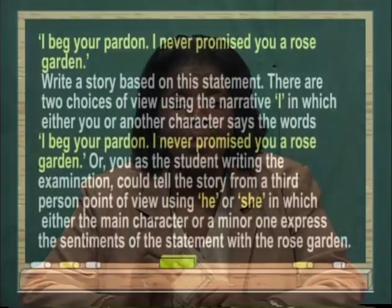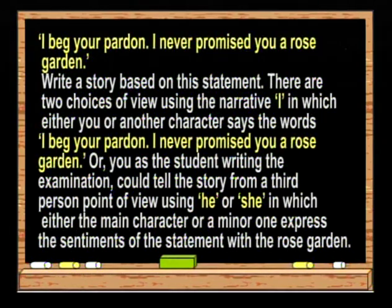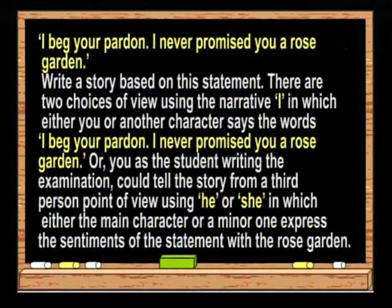Another example is taken from the May-June examination of 2000. Number six of Section 3 says: 'I beg your pardon. I never promised you a rose garden.' Write a story based on this statement. There are two choices of point of view: using the narrative 'I', in which either you or another character says those words; or you could tell the story from a third-person point of view using he or she. You should be aware that the story should have nothing to do with an actual rose garden, as this term is a metaphorical one.